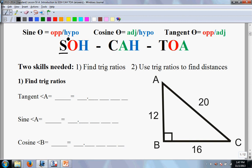SOH means sine is opposite over hypo. CAH means cosine is adjacent over hypo. And TOA means tangent of an angle is opposite over adjacent.